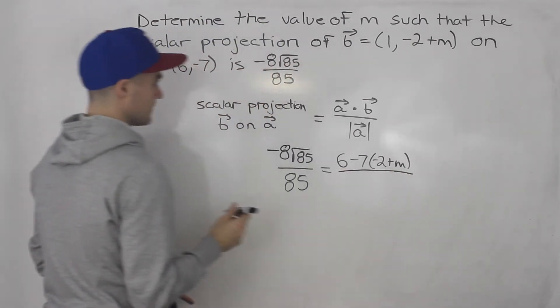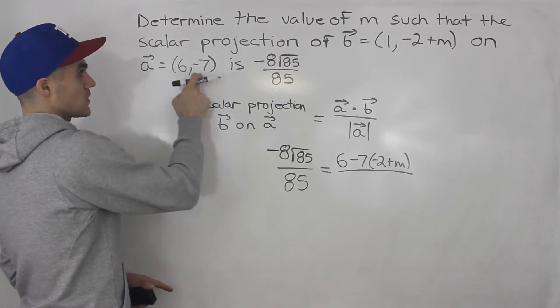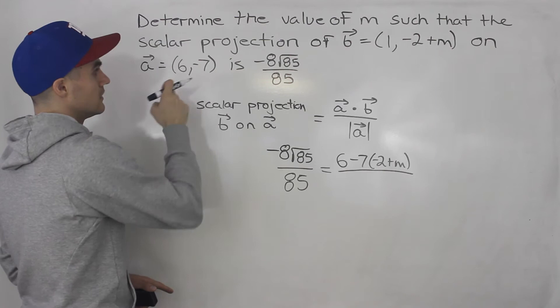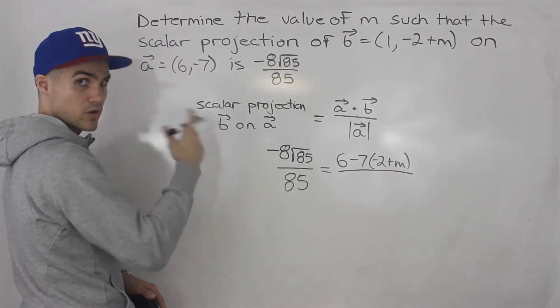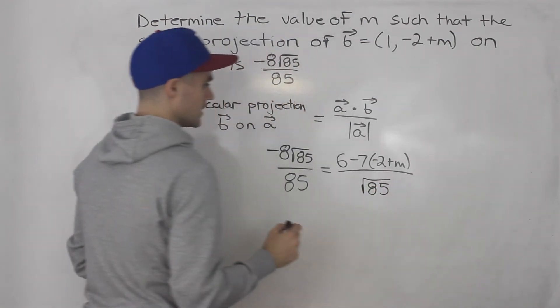All over the magnitude of a. Magnitude of a is going to be 6² plus (-7)². So 36 plus 49 gives us 85, and then the square root of that, which would be √85.